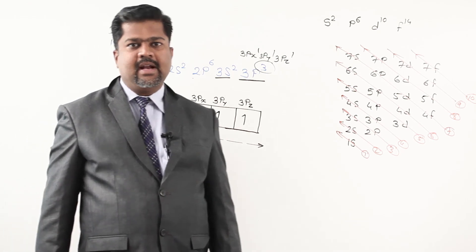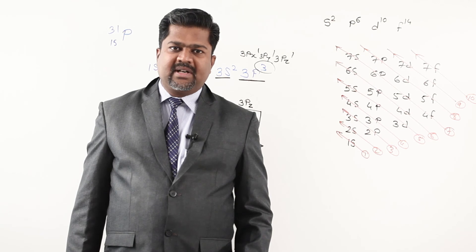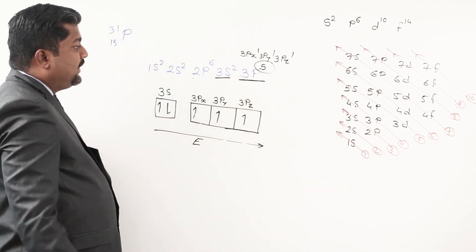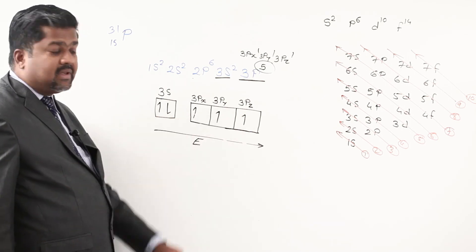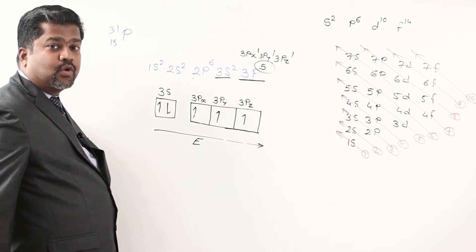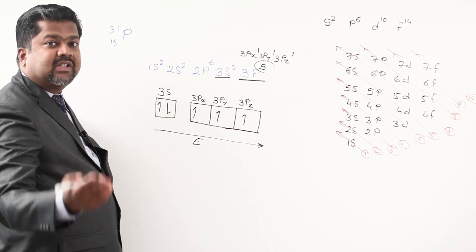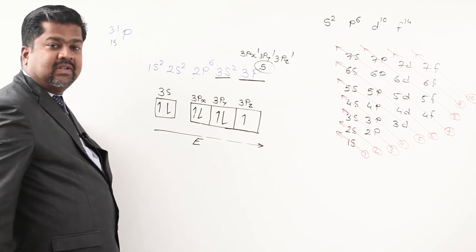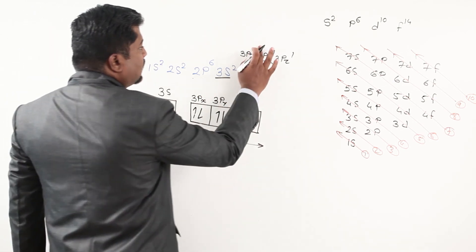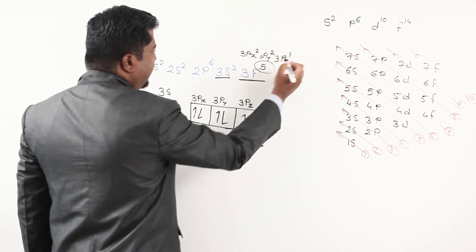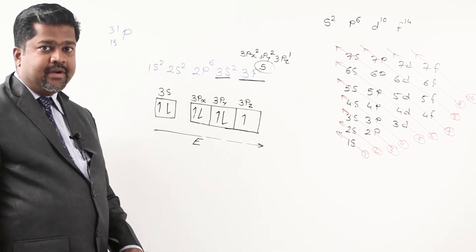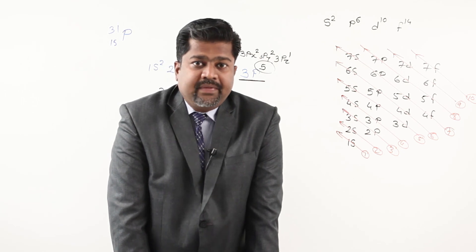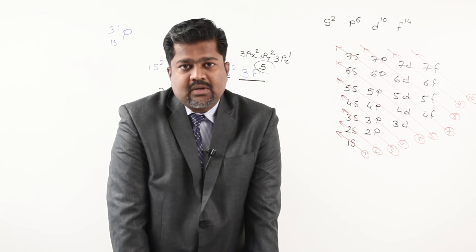So the configuration of chlorine is: 3px2, 3py2, 3pz1. The full electronic configuration by Hund's rule is: 1s2 2s2 2p6 3s2 3px2 3py2 3pz1. This is Hund's rule of maximum multiplicity. In this electronic configuration lecture we discussed: number one, the Aufbau principle; number two, Hund's rule of maximum multiplicity.